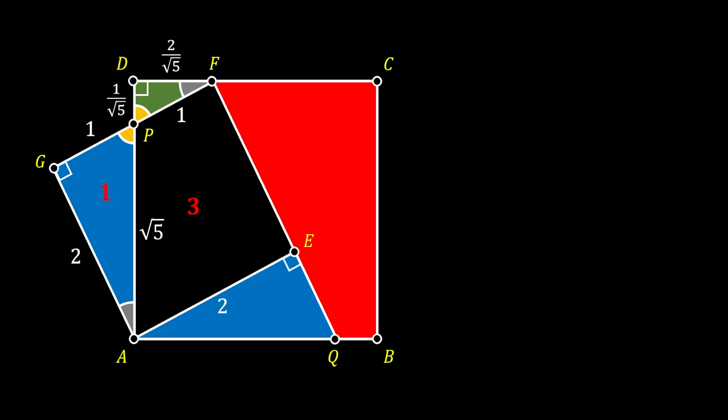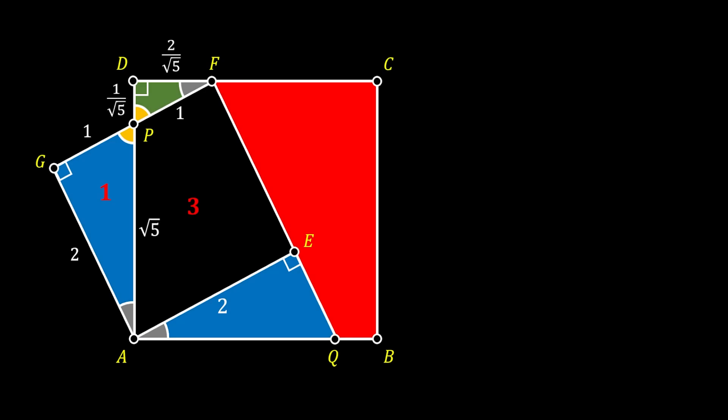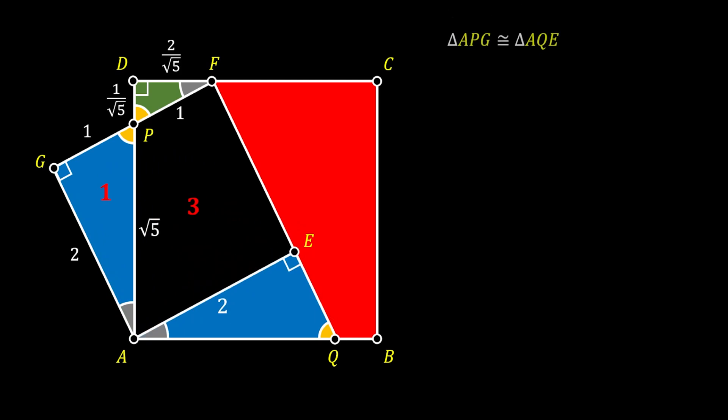Now let's set our attention to the triangle AQE. We can easily see that this triangle is also a right triangle. We will use the fact that we started our problem with the rotation of the square, which means all sides of the square are rotated at the same angle. We can conclude that the angles at point A for both of our blue triangles are actually the same, meaning the angle at point P and the angle at point Q of those two triangles are also the same. Since both triangles have the same angles and share the same side of value two, we can conclude that those two triangles are congruent, meaning both have the same area with a value of one.